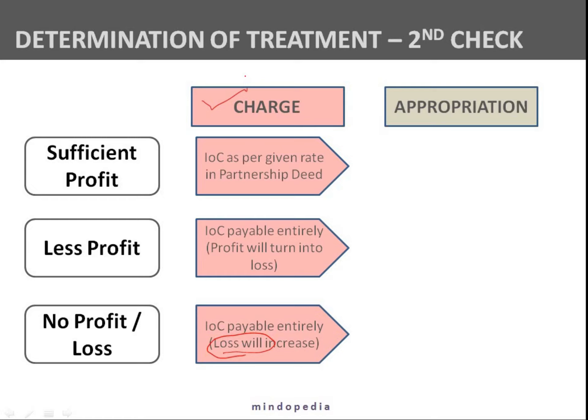If it is appropriation and there is sufficient profit, it is the easiest case — go ahead and give interest on capital to the partners. But if there is less profit, then only as much profit as is available can be given to the partners. Suppose profit is 36,000 but interest on capital is more than that — suppose 40,000. Then only 36,000, which is the profit amount, can be given to the partners.